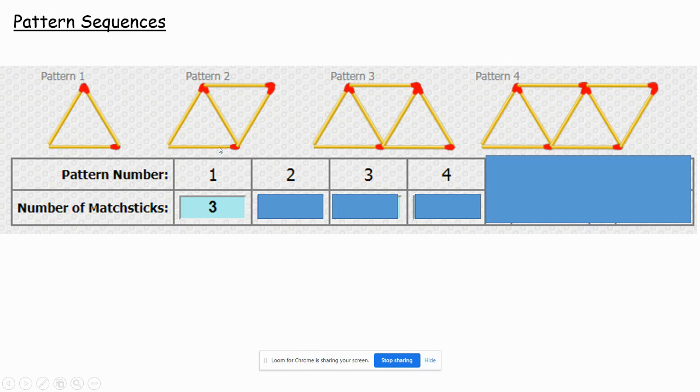So the first pattern you can count, there's three matchsticks. The next pattern has seven matchsticks. The third one has got nine matchsticks.